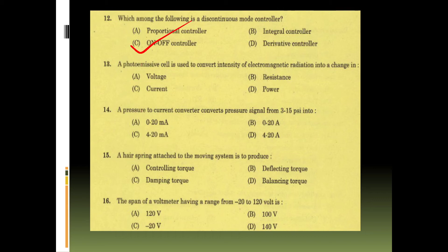Thirteenth question: a photo emissive cell is used to convert intensity of electromagnetic radiation into a change. Photo emissive cell function - intensity of electromagnetic radiation converted into change in voltage, resistance, power, or current. It is used to convert to change in current, option C.